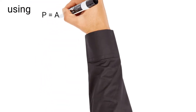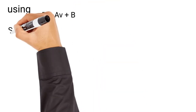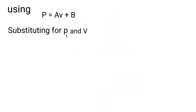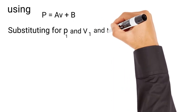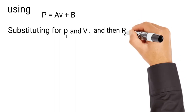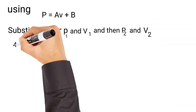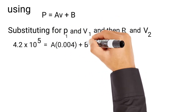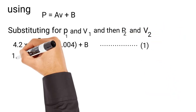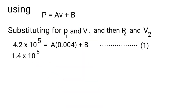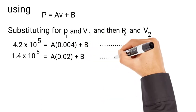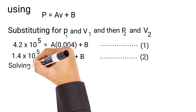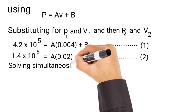To find A and B, we use P = AV + B and substitute the values P1, V1 and P2, V2. Equation 1: 4.2 × 10⁵ = A(0.04) + B. Equation 2: 1.4 × 10⁵ = A(0.02) + B. Note that bar means 10⁵ Pa. We solve equations 1 and 2 simultaneously — you can use a calculator or solve manually.